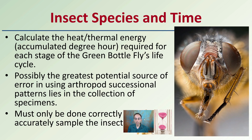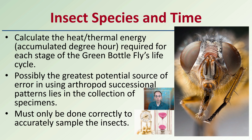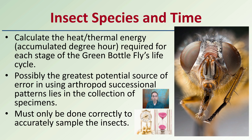When looking at insect species and time, we can calculate the heat or thermal energy accumulated in degree-hours required for each stage of, for example, the green bottle fly's life cycle — just one insect that can be used. Possibly the greatest potential source of error when using arthropod successional patterns lies in the collection of the actual specimens, which is why entomologists are typically focused in this area to ensure accuracy. It's important to get a good sample and also the correct sampling of those insects across the various life cycle stages observed.